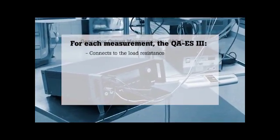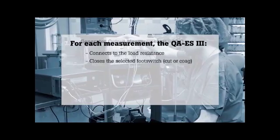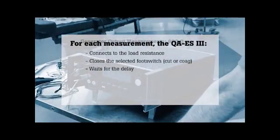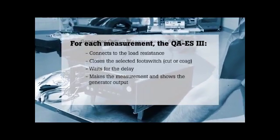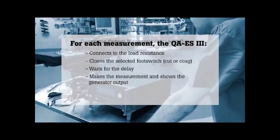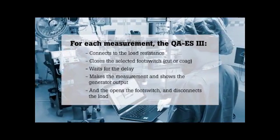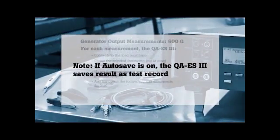connects to the load resistance, closes the selected footswitch (cut or coag), waits for the delay time, makes the measurement and shows the generator output, then opens the footswitch and disconnects the load. Note: if autosave is